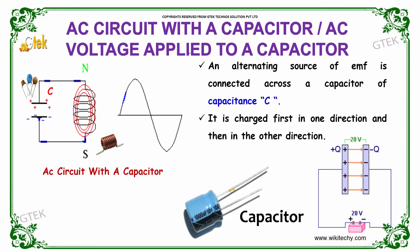Let's talk about the AC circuit with the capacitor. An alternating source of EMF is connected across the capacitor of capacitance C. It is charged first in one direction and then in another direction.